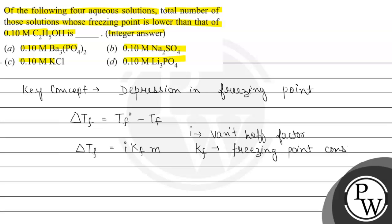From here we can see that delta Tf is directly proportional to its van't Hoff factor, which means the depression in freezing point is directly proportional to its van't Hoff factor. The more the van't Hoff factor, the greater the freezing point depression.